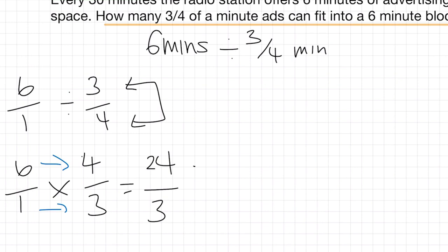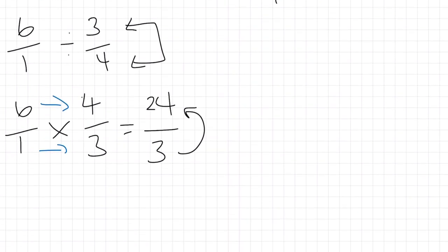Now this is an improper fraction where we have the number at the top that's greater than the number at the bottom. So you can't have more parts than the whole itself. So to convert that now, what we need to do is just simply divide the three into 24. And when we do that, we end up with an answer of eight.